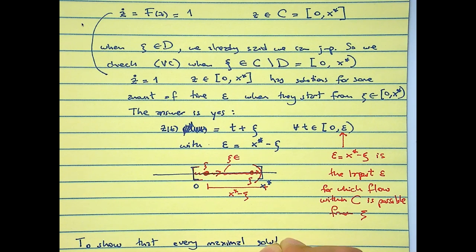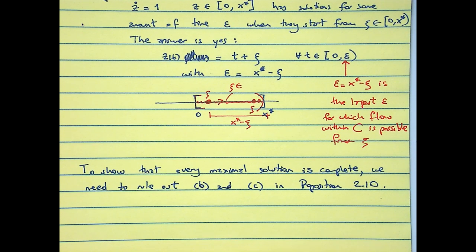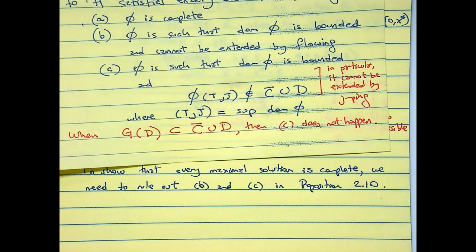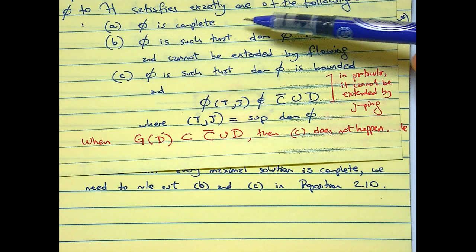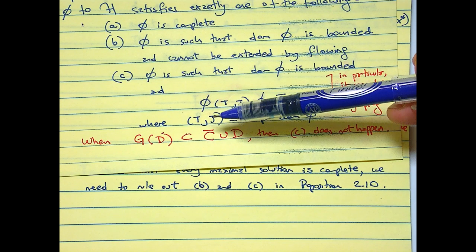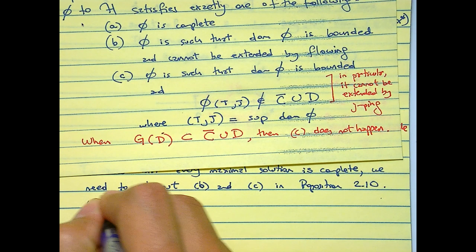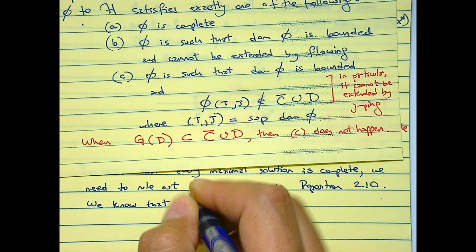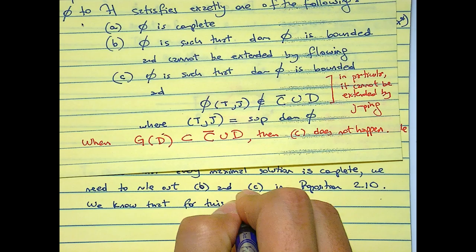Now we can show that every maximal solution is complete in D. We need to rule out condition C or condition B and condition C in Proposition 2.10, because remember that every maximal solution has these three possibilities. If we want to show that every maximal is complete, we need to rule out this B and this C. We already argue that C does not hold, right?